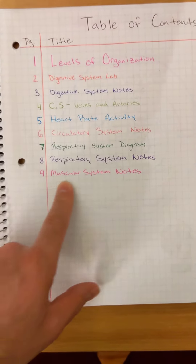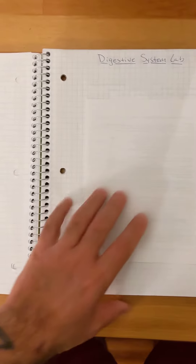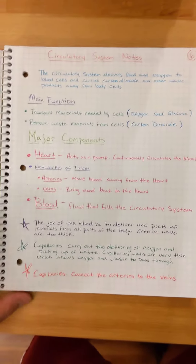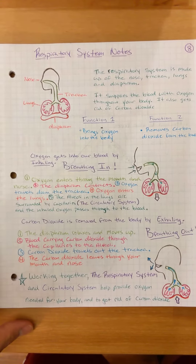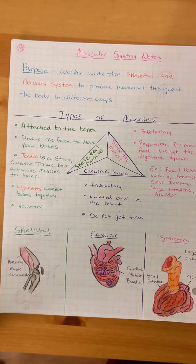We should have made our way all the way to page number nine, muscular system notes, as of today. I'm just going to quickly flip through these pages. There's our page two at the lab. Page five with the heart rate activity, page six with our circulatory system notes, page seven with our respiratory system diagram. There's our respiratory system notes on page number eight. And then here's page number nine, muscular system notes.